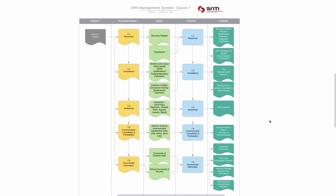For Clause 7.5, documented information, I write a process covering creation of documents, how they're approved and published, how obsolete copies are controlled, and how changes are managed. I use a hard copy distribution register to track printed policies distributed around the organization, a records register showing what records are maintained, by whom, for how long, and how they're protected, and a register for the control of documents of external origin.